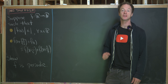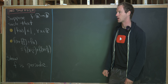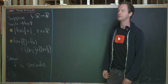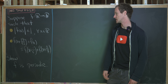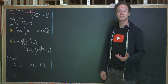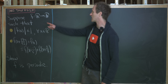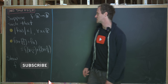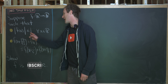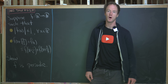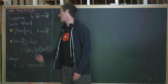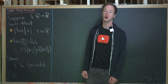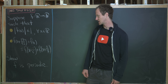Today I've got a nice functional equation problem from the International Math Olympiad shortlist. We've got a function from ℝ to ℝ such that it's bounded by 1 — the absolute value of f(x) is less than or equal to 1 for all real numbers x.